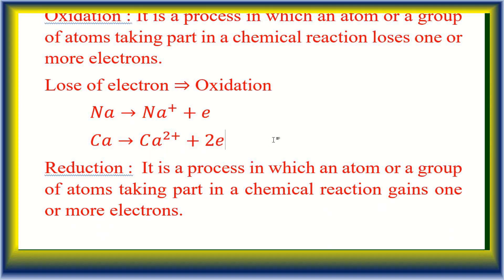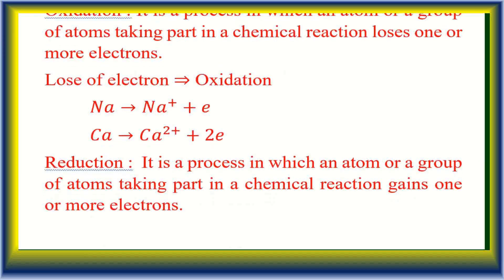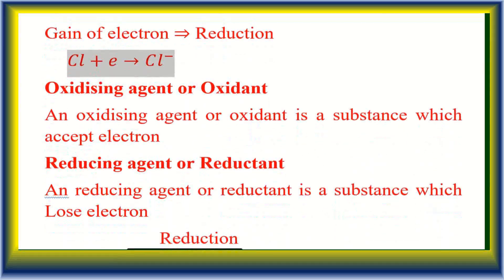Another example: calcium loses two electrons and forms Ca²⁺ ion — that is also oxidation. The opposite is reduction: reduction is a process in which an atom or group of atoms gains one or more electrons. For example, chlorine accepts or gains one electron and forms Cl⁻ ion. So, loss of electron is oxidation and gain of electron is reduction.